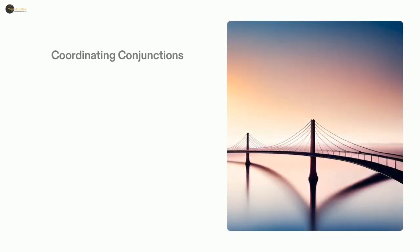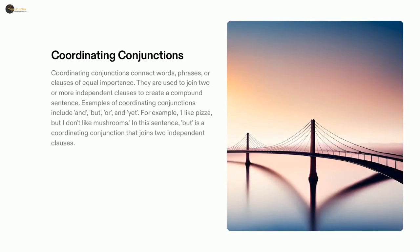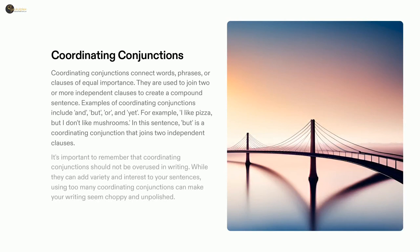Conjunction use is very important when constructing sentences in English to ensure they make sense and are cohesive. Coordinating conjunctions, such as 'and', 'but', 'or', and 'yet', are particularly useful in linking multiple elements of the sentence.